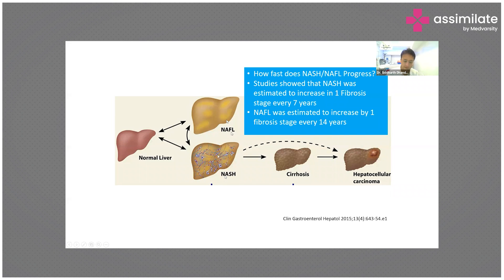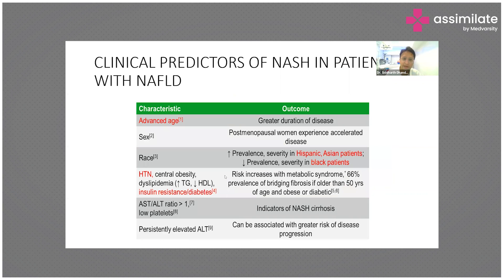Clinical predictors of NASH in non-alcoholic fatty liver disease include: age, because greater age signifies longer disease duration; post-menopausal women experience accelerated disease; the Asian population has greater prevalence and severity; and hypertension, obesity, dyslipidemia, insulin-resistant diabetes are all risk factors. An AST-to-ALT ratio greater than one with a low platelet count is suggestive of cirrhosis.